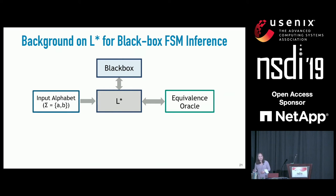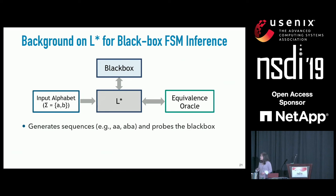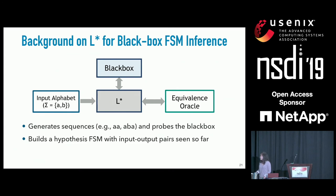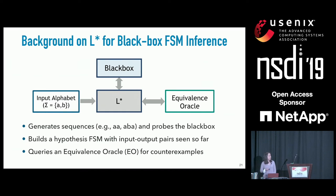Given the input alphabet, L* generates sequences like a, a, a, a-b, a, a-b-b, and so on to probe the black box. It records the outputs, uses those input-output pairs to infer a hypothesis FSM, and at some point queries an equivalence oracle for counterexamples. Those counterexamples are used to refine the hypothesis FSM further, repeating until no more counterexamples are found. The output is the FSM representation of the black box.